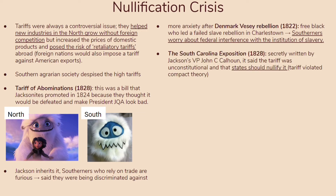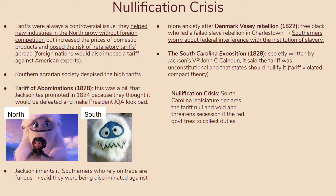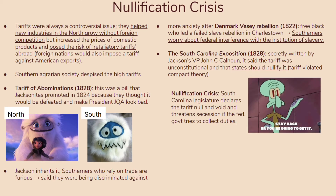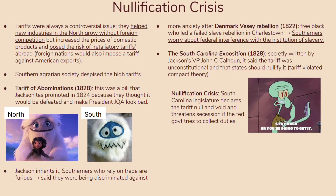The tipping point was the South Carolina Exposition in 1828, a document secretly written by Jackson's own VP, John C. Calhoun. It stated the tariff was unconstitutional and that states could nullify it, as it violated the compact theory — the idea that the government and people have an agreement, and if broken, the other side has a right and duty to retaliate. The South Carolina legislature declared the tariff null and void and threatened secession if the federal government tried to collect duties.